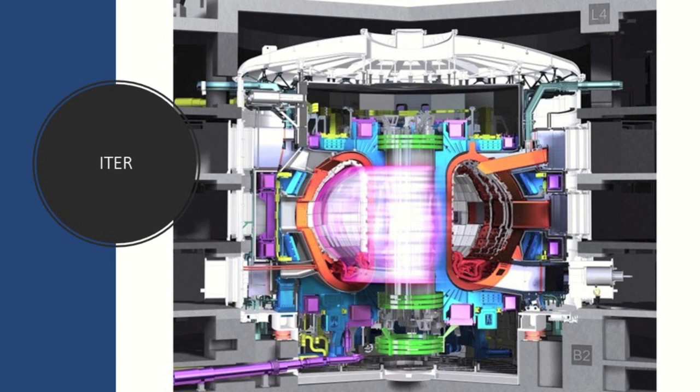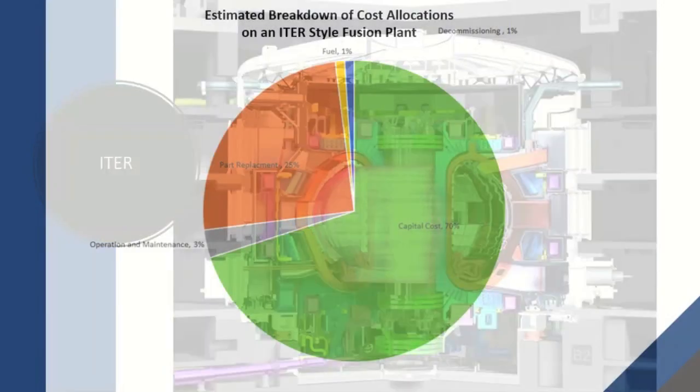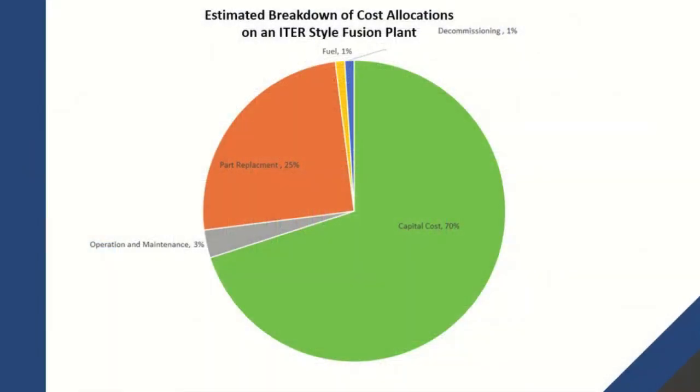The project is expected to take 35 years to finish and costs approximately 16 billion euros. The breakdown of fusion's costs for an ITER-style fusion generator would resemble that of fission or hydro, with a low fuel cost and a high capital cost.